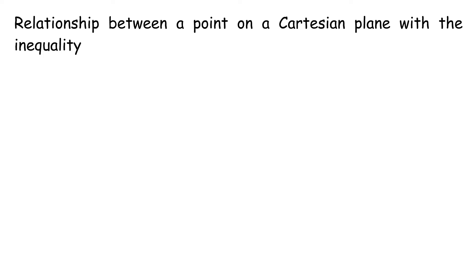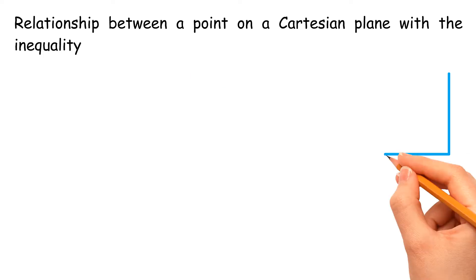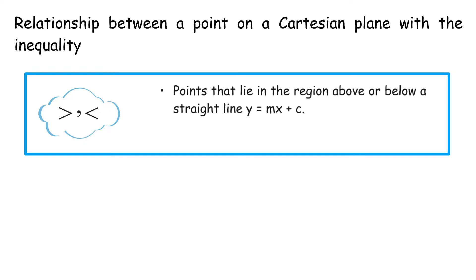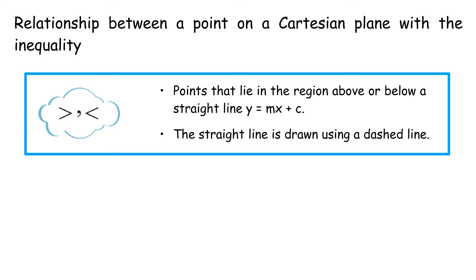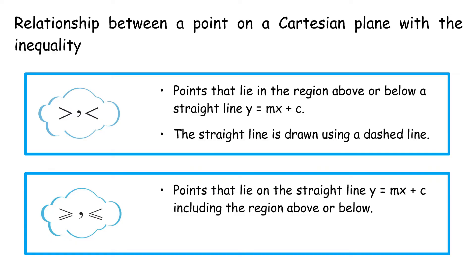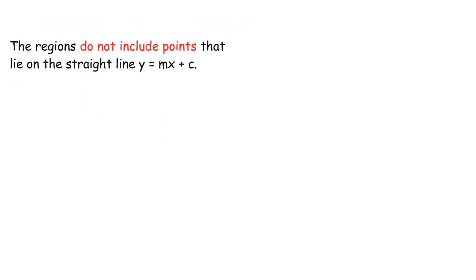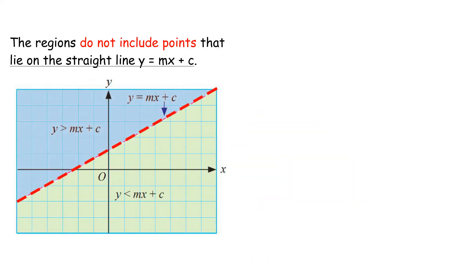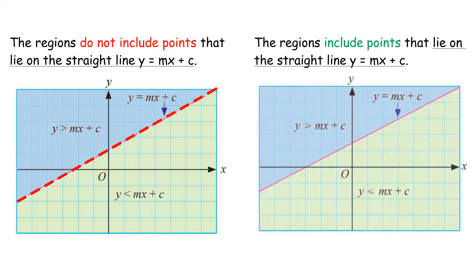Relationship between a point on a Cartesian plane and the inequality: For greater than or less than, points lie in the region above or below the straight line y equals mx plus c, and the straight line is drawn using a dashed line. For greater than or equal to or less than or equal to, points lie on the straight line y equals mx plus c including the region above or below, and the straight line is drawn using a solid line.